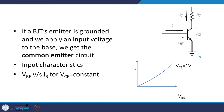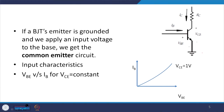If a BJT emitter is grounded and we apply an input voltage to the base, we call it the common emitter circuit. For the input characteristic, we plot VBE versus IB. If we plot VBE versus IB for a constant VCE value — that is, the voltage between collector and emitter — this is how we get the characteristic curve.